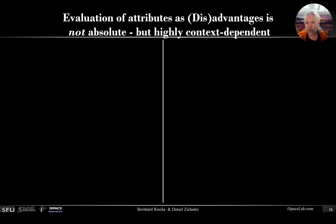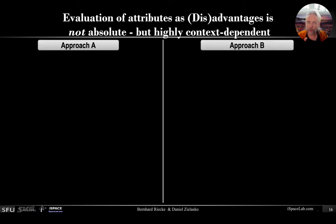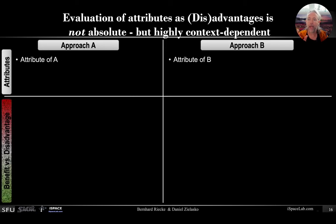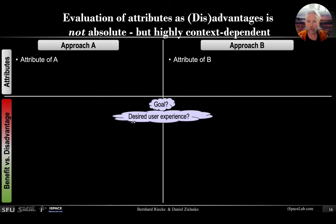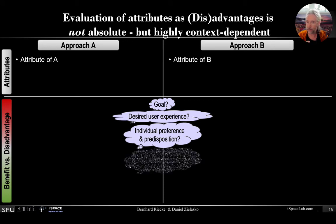What I want to conclude with is that this approach of distinguishing between attributes and their benefits or disadvantages can be used for just about any system. Because whether something is a pro or con really depends on the goal, the desired user experience, the individual preferences, and maybe predispositions.